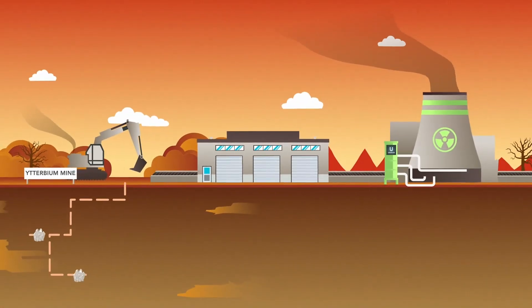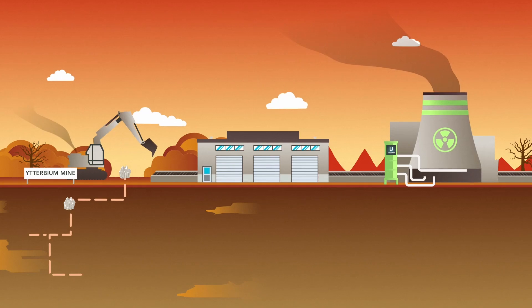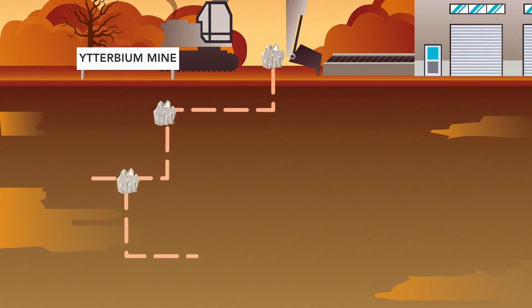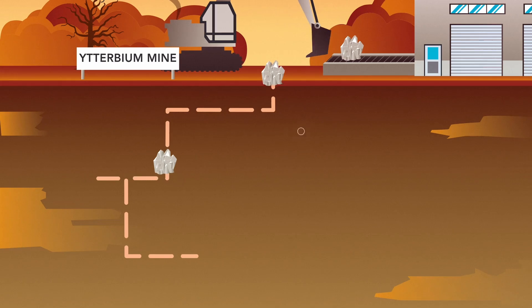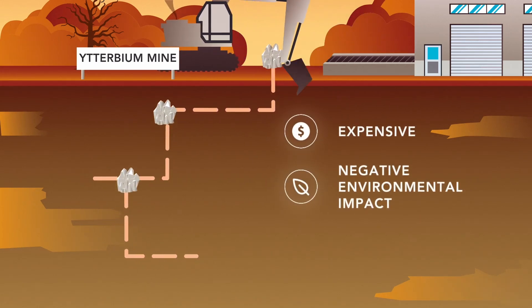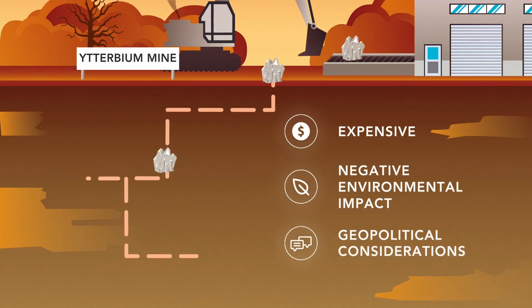The production of Lutetium-177 starts with the mining of the rare earth element Ytterbium. Due to the low abundance of Ytterbium ore in the ground, its mining is very expensive, has a negative impact on the environment, and carries its own set of geopolitical considerations.